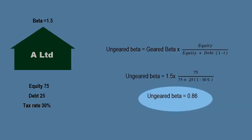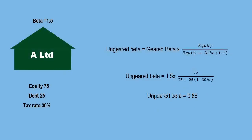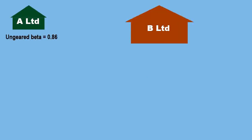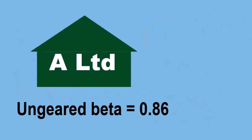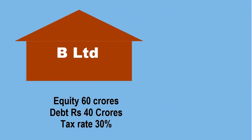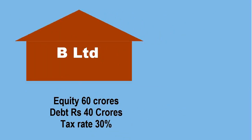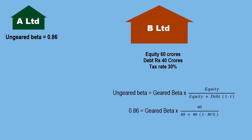Now we take this ungeared beta of 0.86 and gear it with the capital structure of B Limited to arrive at B's beta. Using the same formula — ungeared beta = geared beta × [equity / (equity + debt × (1 − t))] — but now with B Limited's equity of 60 crores and debt of 40 crores, we solve for the geared beta. The result is a geared beta of 1.26, which is the beta for B Limited.